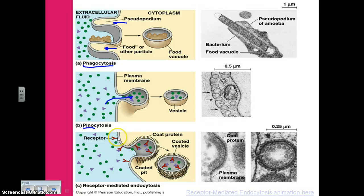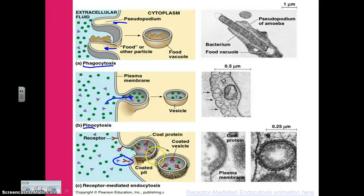Finally, we have receptor-mediated endocytosis. The receptor particles here are the important element. It looks an awful lot like pinocytosis, but these receptor structures somehow interact with and capture specific particles. When those particles fill the receptors, endocytosis takes place, and now the cell is guaranteed a certain quantity of those specific particles.